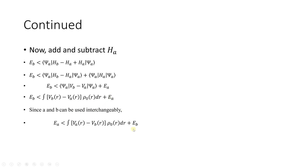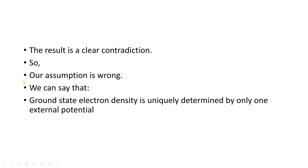After adding both equations, we get E_A + E_B < E_A + E_B, which is a clear contradiction — E_A + E_B cannot be less than itself. Therefore our assumption was wrong, and we can conclude that the ground state electron density is uniquely determined by only one external potential. This completes the first theorem of Hohenberg and Kohn. The link to the second theorem is given in the description.